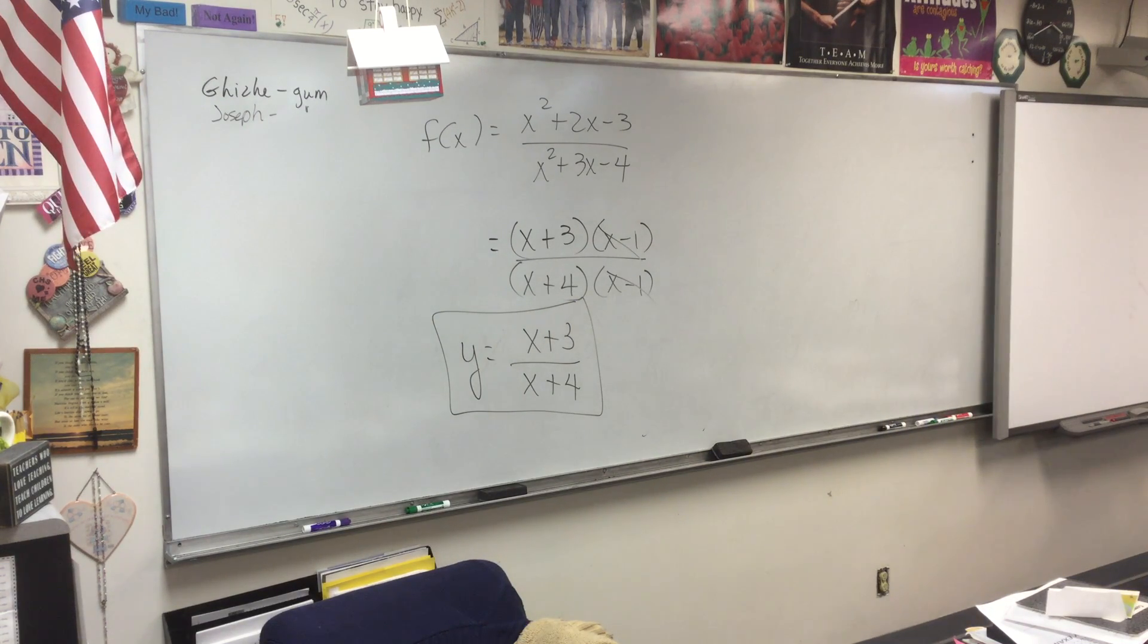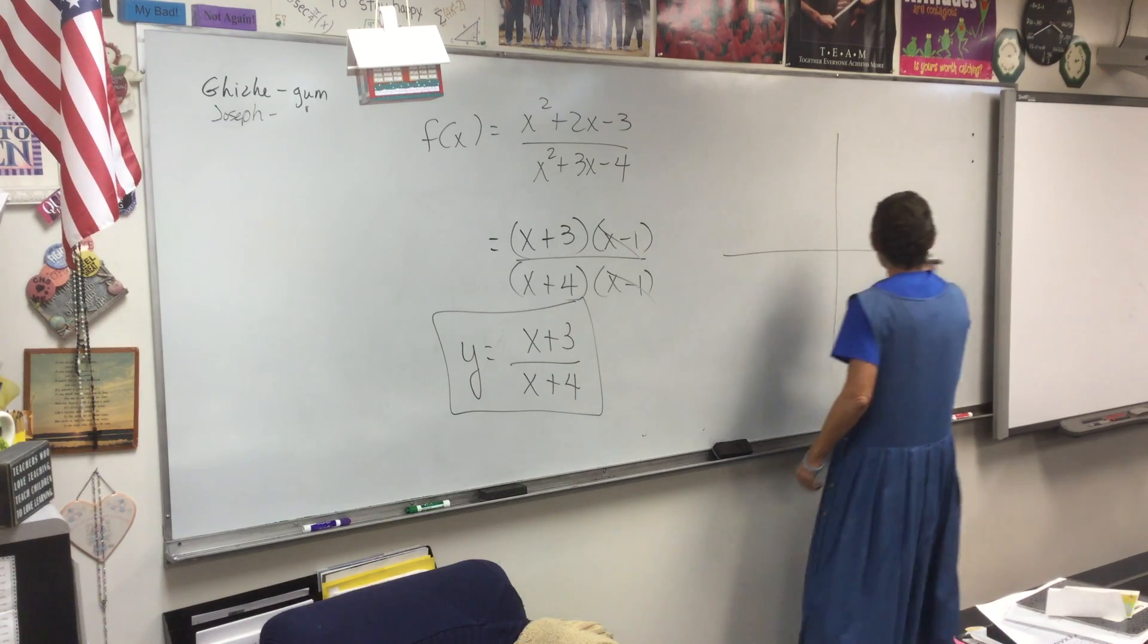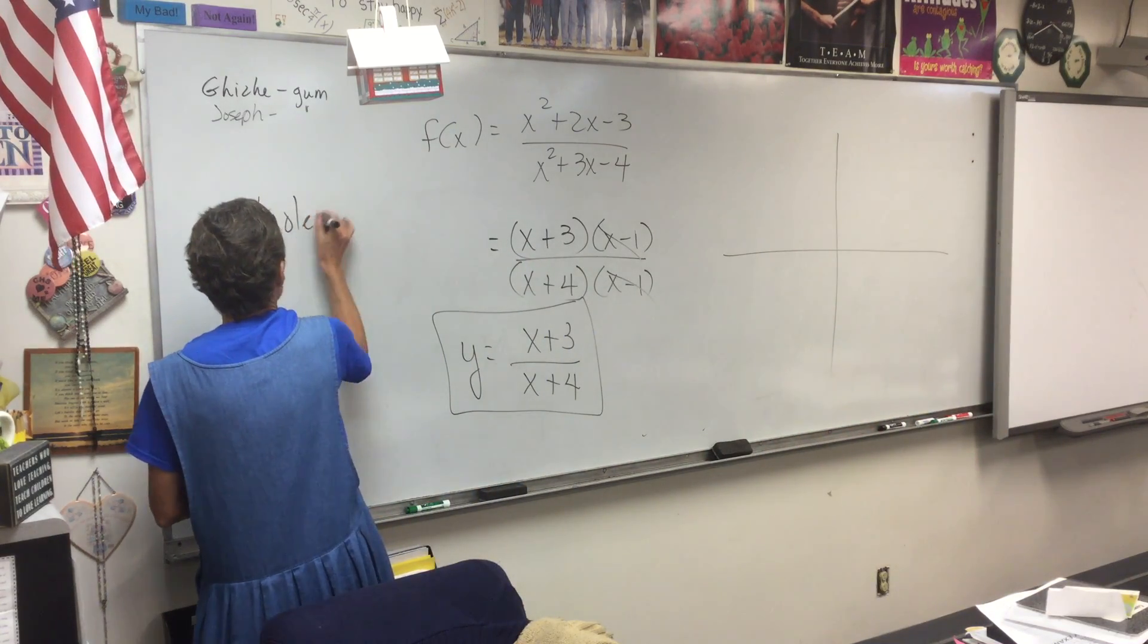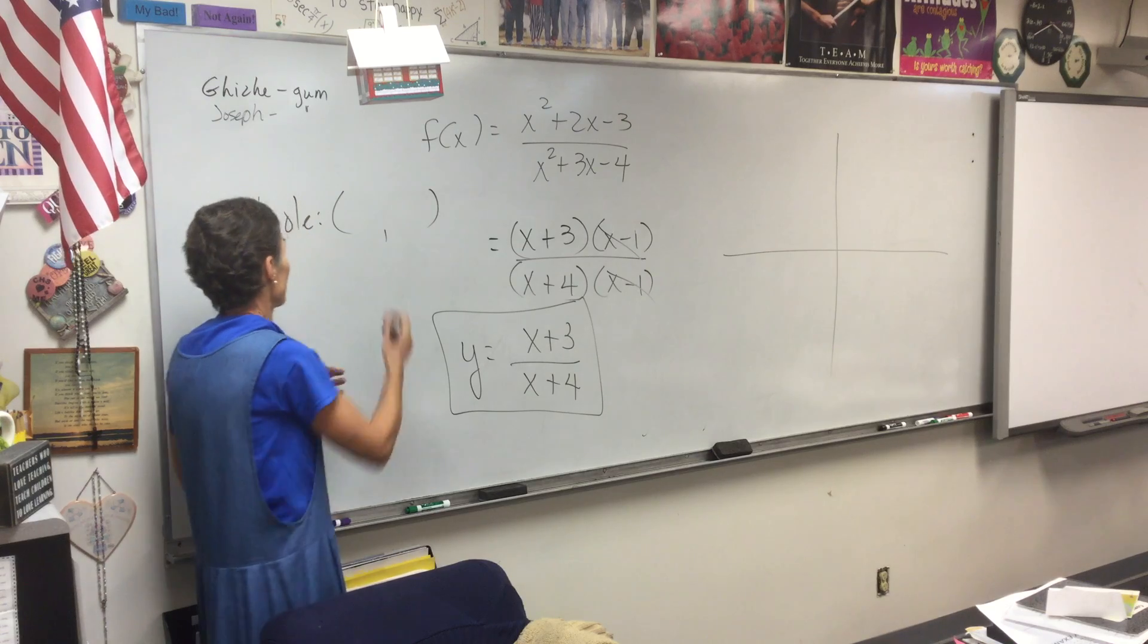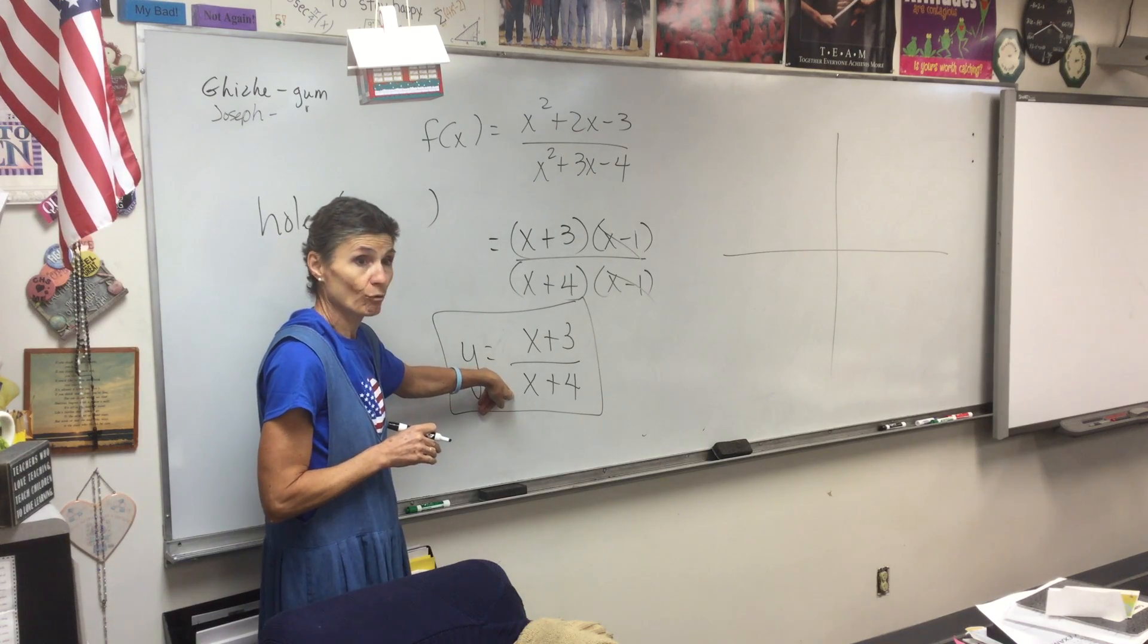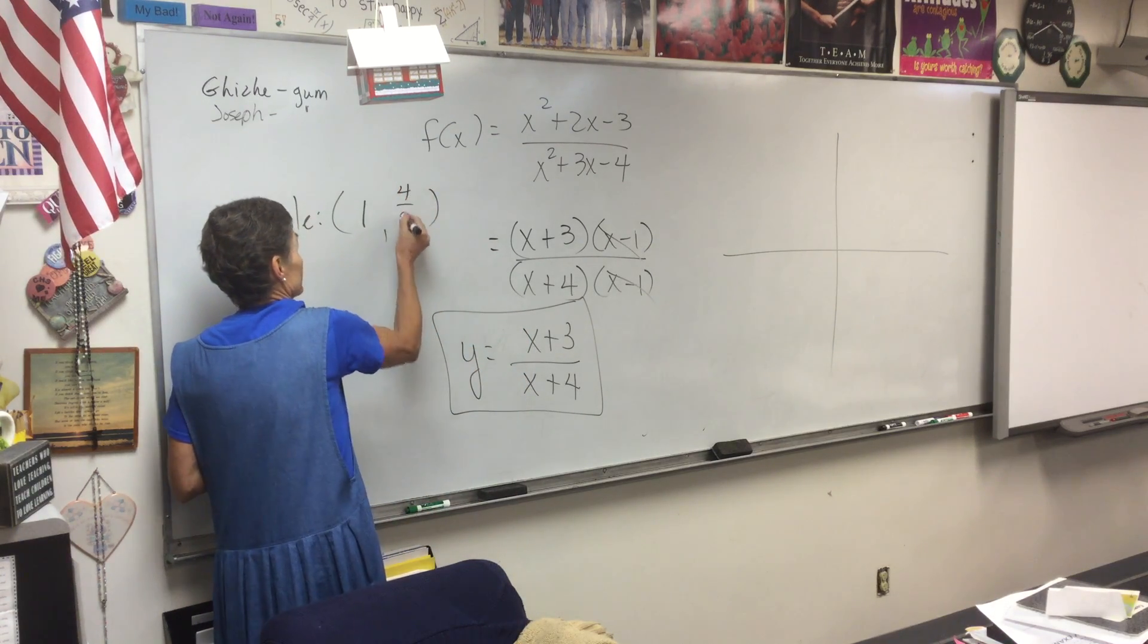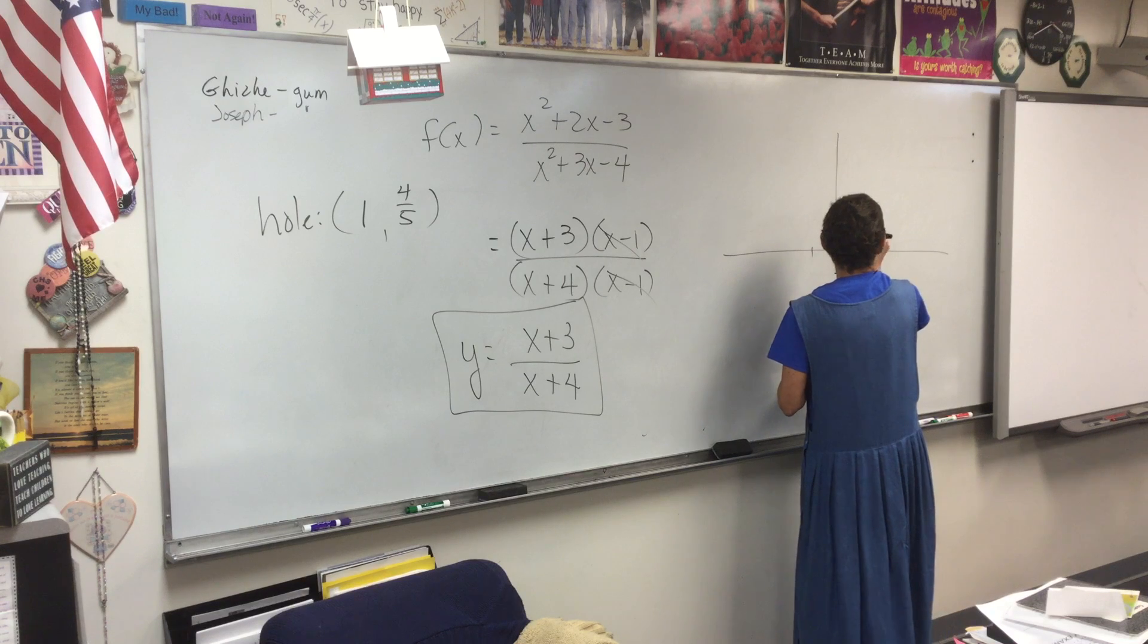If you got it factored correctly, you notice it cancels. The fact that we have a cancellation tells me I'm going to have a hole in my picture. Where is that hole going to be? At one. Now how do I find the y? Plug the one in. What do I get? Four-fifths. So I have a hole in my graph at one comma four-fifths.